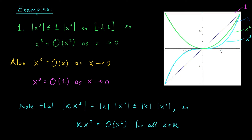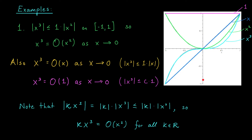Notice that we could have also said X cubed is of order X as X goes to zero. After all, the function G of X equals X, graphed here in dark blue, is even bigger than X squared in absolute value near the origin, and therefore it must also be bigger than X cubed in absolute value near the origin. We could even take this one step further: X cubed is of order one as X goes to zero. The function G of X equals one is clearly larger than X cubed in absolute value near the origin. Saying that a function is of order one as X goes to zero is really just saying that the function is bounded in absolute value by a constant C — the function's values aren't blowing up to infinity, they stay bounded.